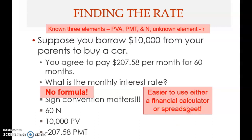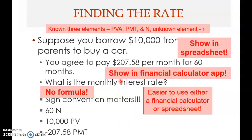To solve such problems, it's easier to use a financial calculator or spreadsheet. You cannot solve it manually with just a scientific calculator and the formula. There are some exceptions when the number of periods is very small — two, three, or four — but with 60 periods it becomes virtually impossible to solve manually. Therefore, we use a financial calculator or spreadsheet which gives the answer immediately.